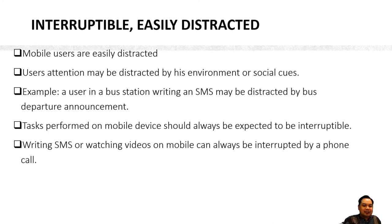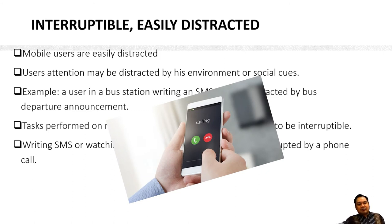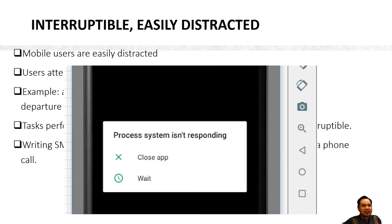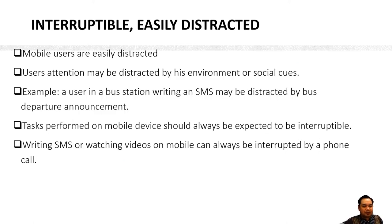For example, while a user is playing games, the game can be interrupted by a phone call. A good mobile application developer must ensure the game saves its state while the user is answering the phone. It must not let the game crash or go unsaved if the user forgot to press the pause button — the game must be paused automatically without the user pressing any button.